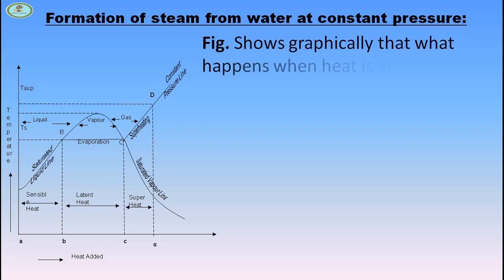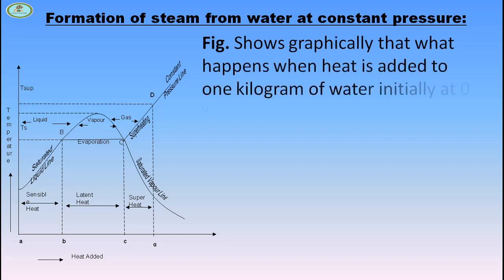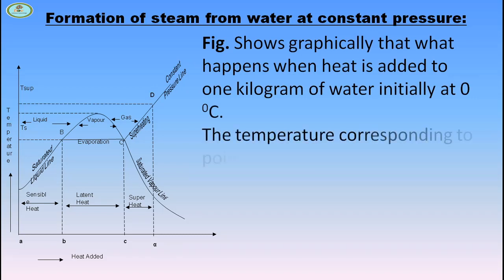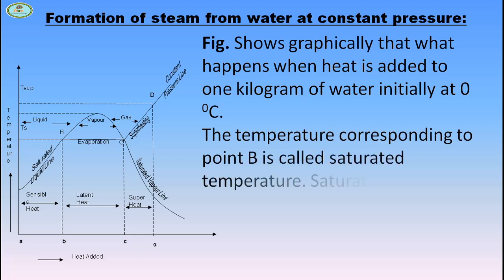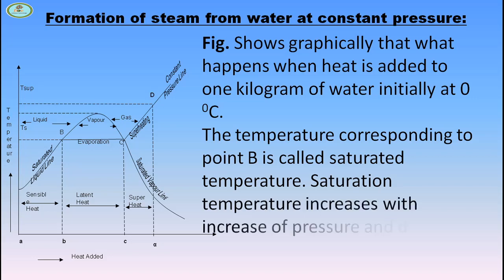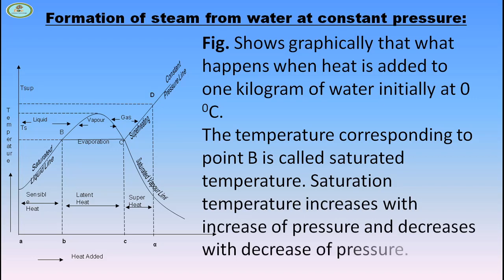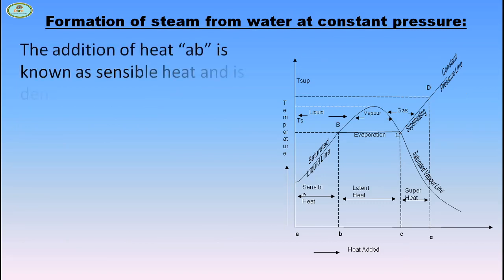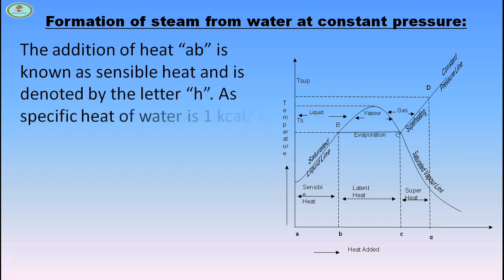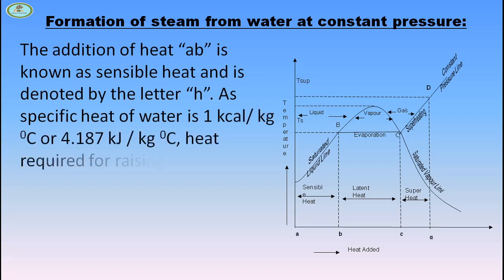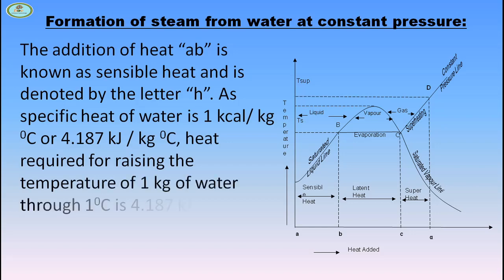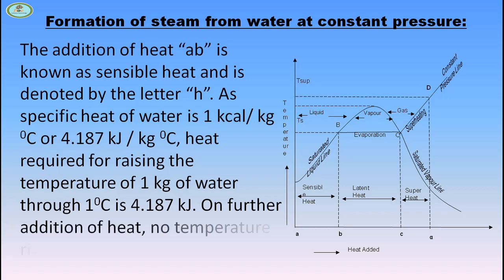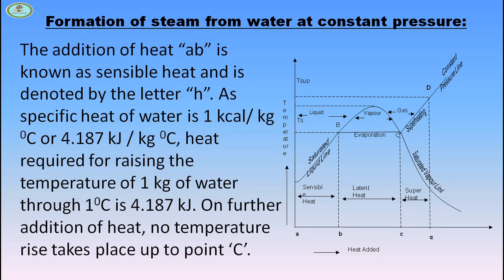This figure shows graphically what happens when heat is added to 1 kg of water initially at 0 degrees Celsius. The temperature corresponding to point D is called the saturation temperature. Saturation temperature increases with increase of pressure and decreases with decrease of pressure. The addition of heat from A to B is known as sensible heat and is denoted by the letter H. As the specific heat of water is 1 kcal per kg·°C or 4.187 kJ per kg·°C, heat required to raise the temperature of 1 kg of water by 1 degree is 4.187 kJ. On further addition of heat, a temperature rise takes place up to point C.